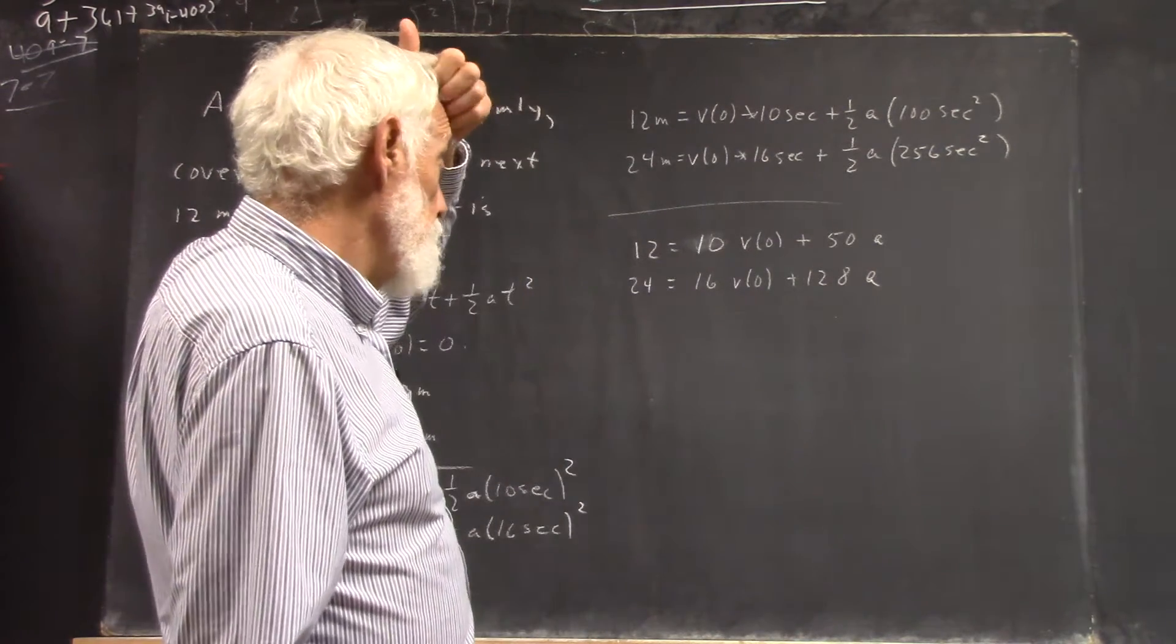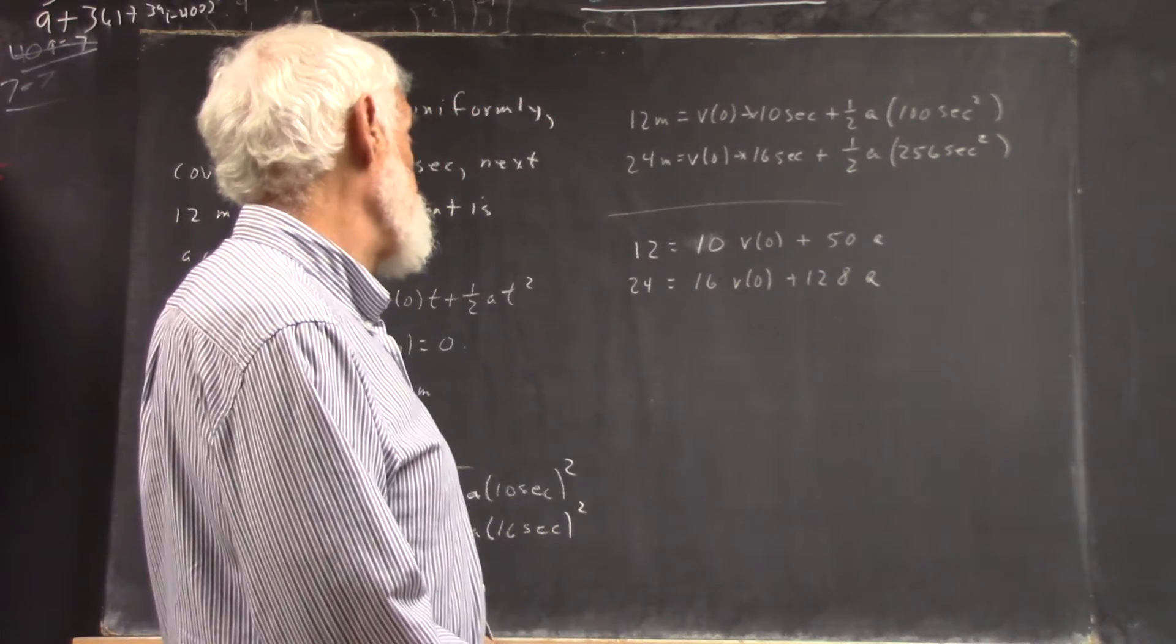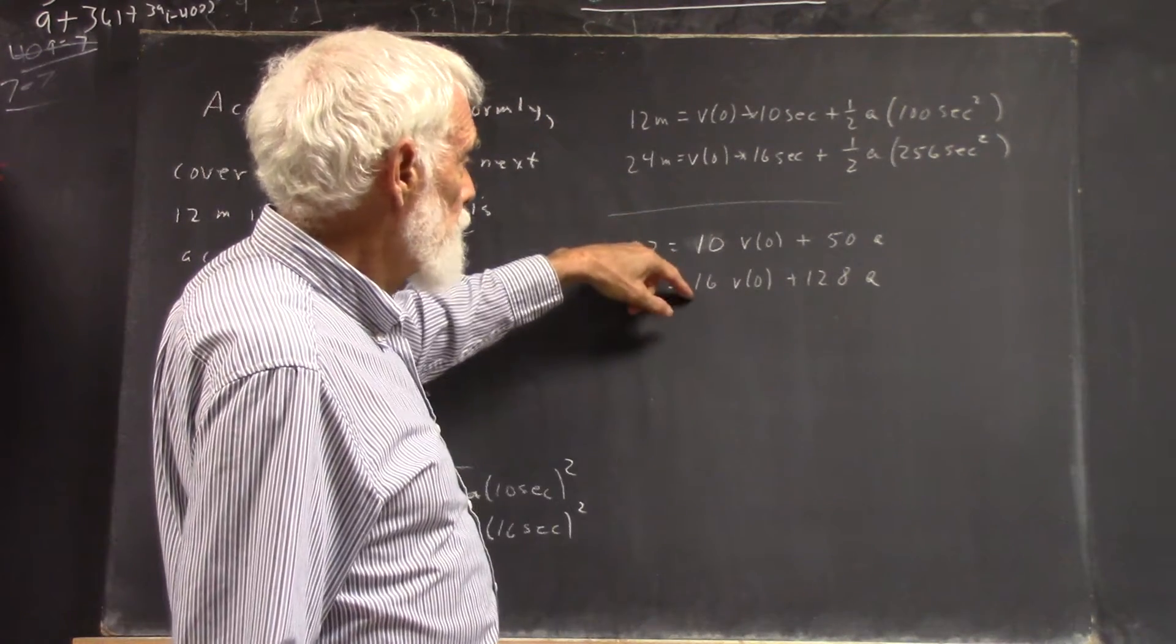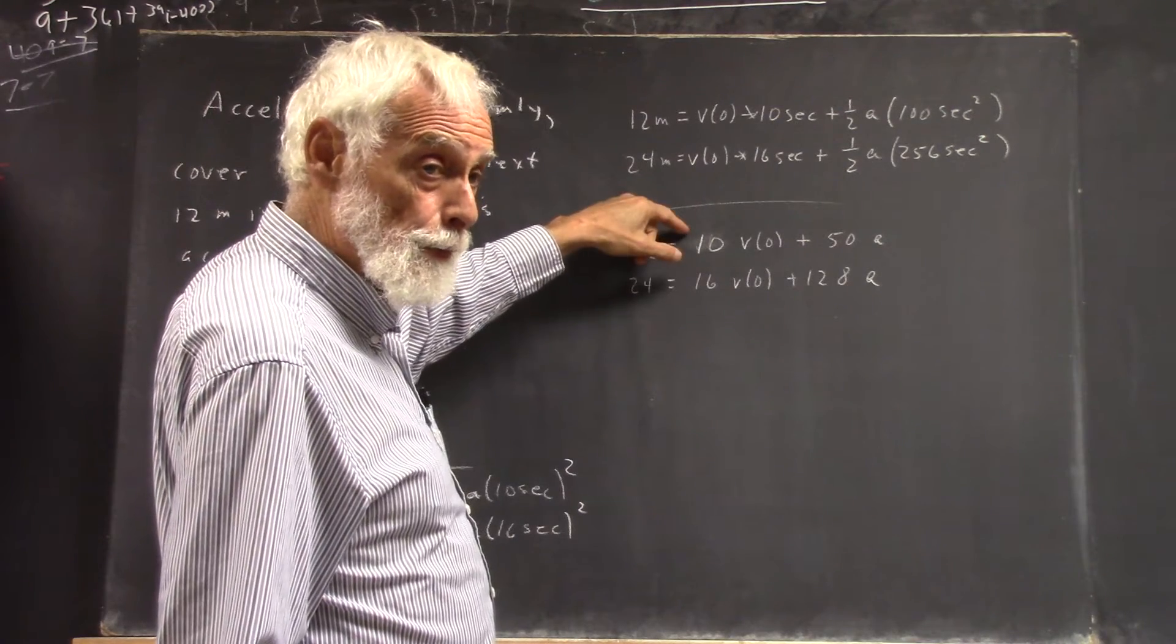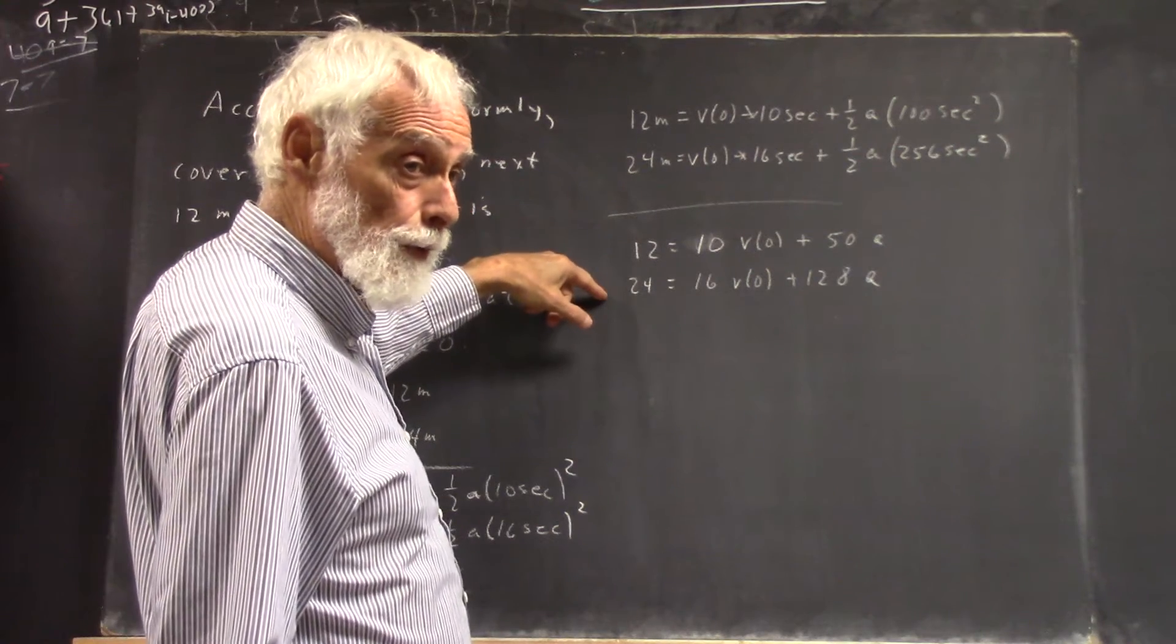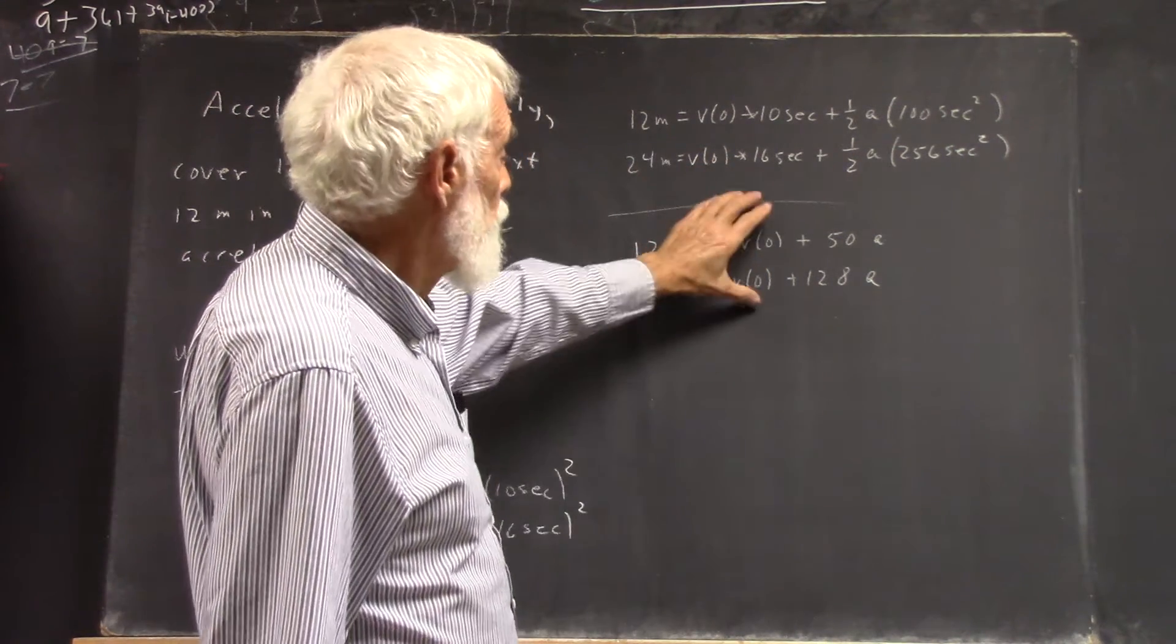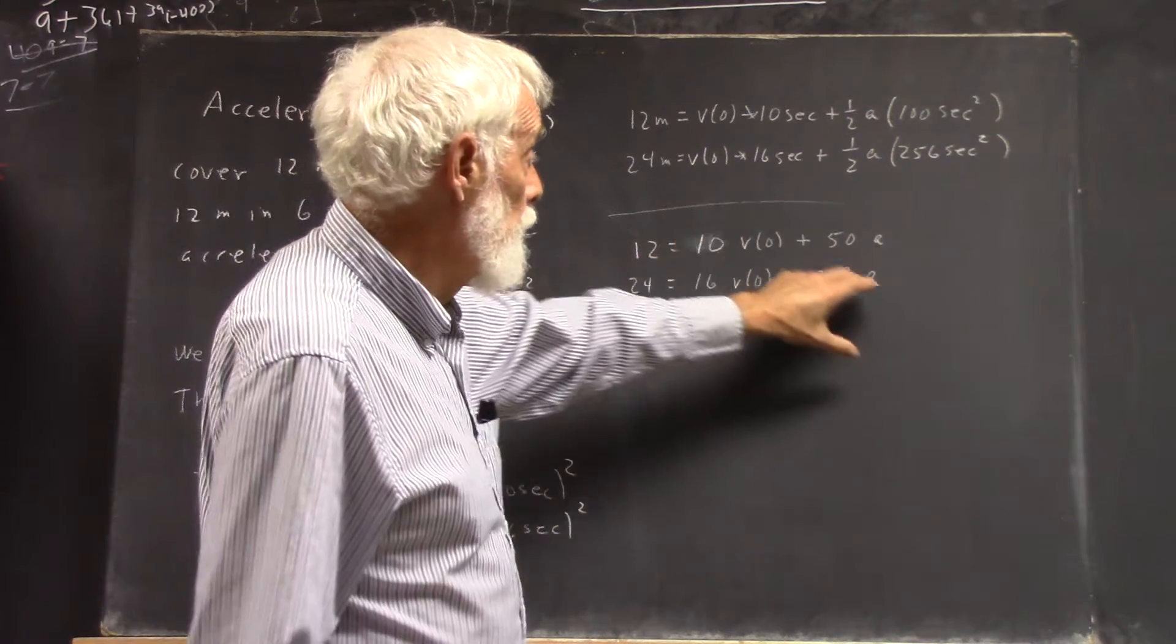So, there are a couple of alternatives in doing this. The ratio of 16 to 10 is the ratio of 5 to 3. So, you can multiply this equation by negative 5 and this one by 3. And then, when you add the resulting equation, the v(0) term will go away, and you'll have a.